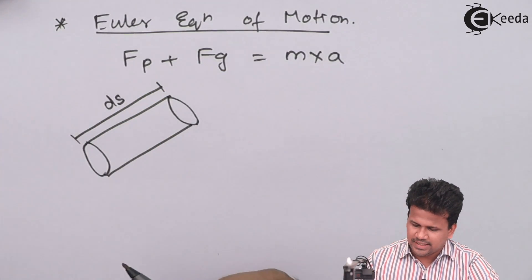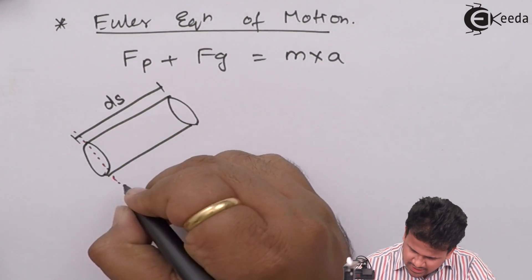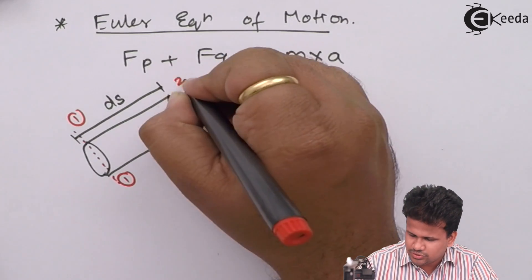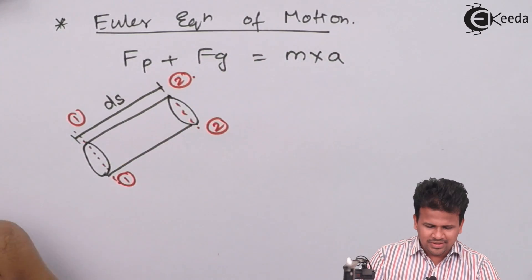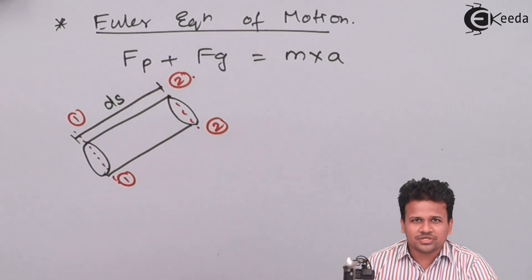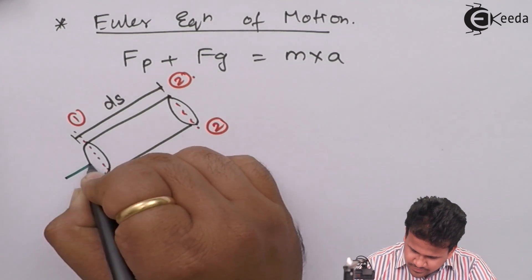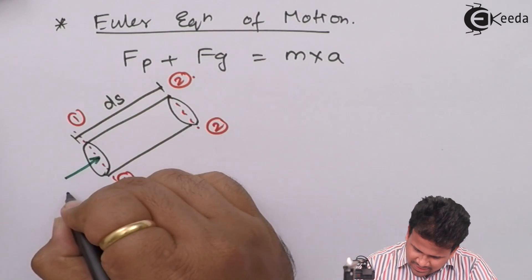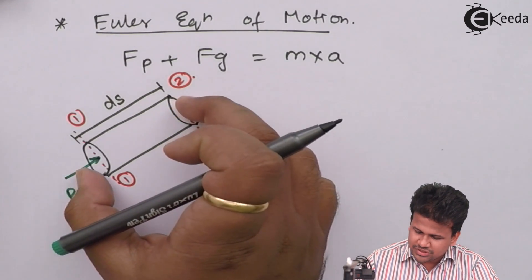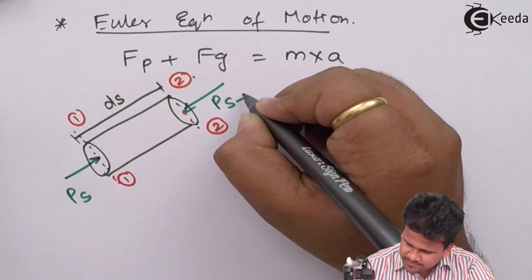The control volume has a length dS. Let us consider this section as section 1-1 and this section as section 2-2. We are applying two forces here. The first force is due to pressure on the fluid. The pressure at position 1-1, let us consider this as P_S. The pressure at position 2-2 will be equals to P of S plus dS.